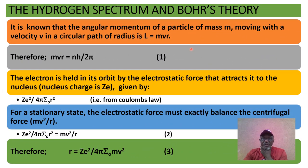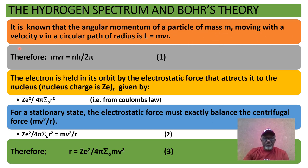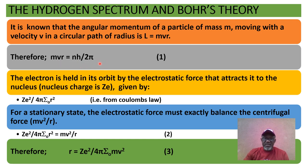The hydrogen spectrum and Bohr's theory. It is known that the angular momentum of a particular mass M moving with velocity V in a circular path of radius r is L = MVR. Remember your classical mechanics — MVR. Therefore MVR = nh/2π. From Bohr's assumption, the angular momentum equals multiples of h/2π, so MVR = nh/2π, and this is equation 1.